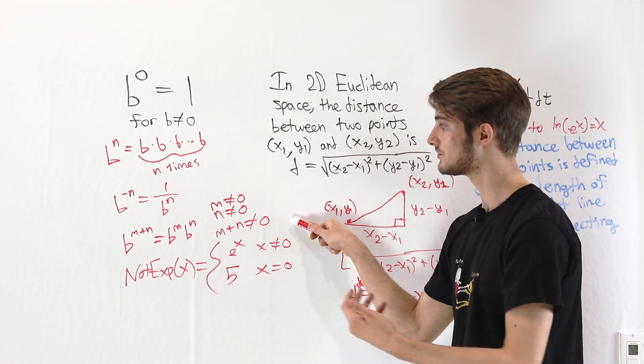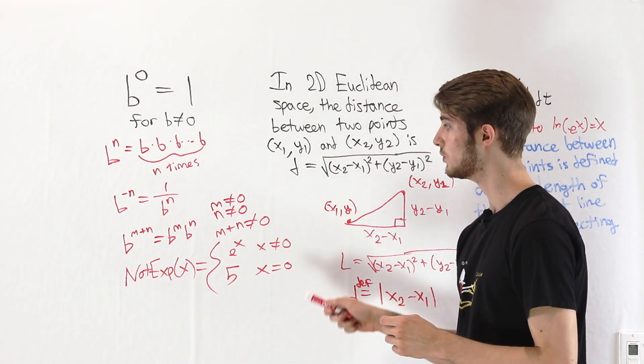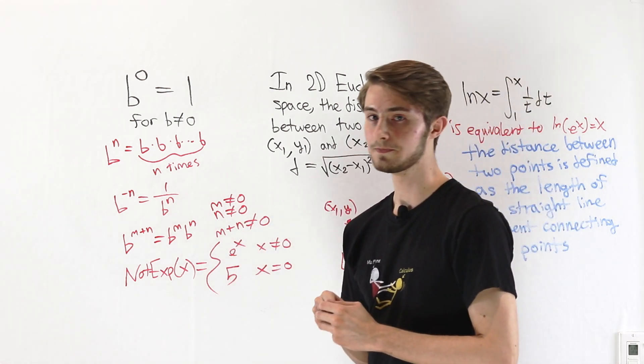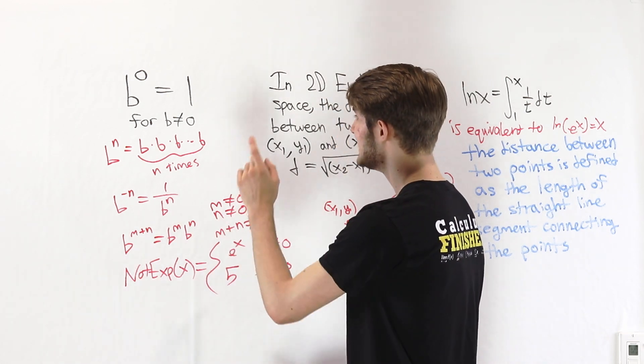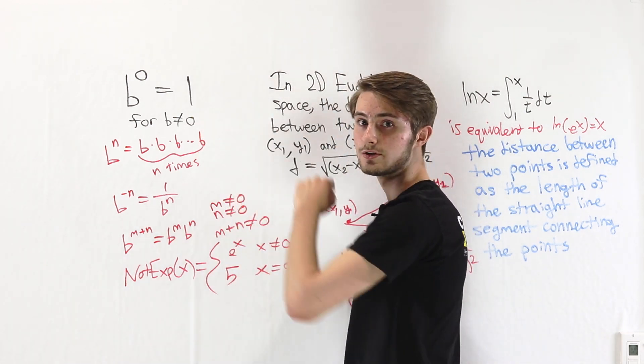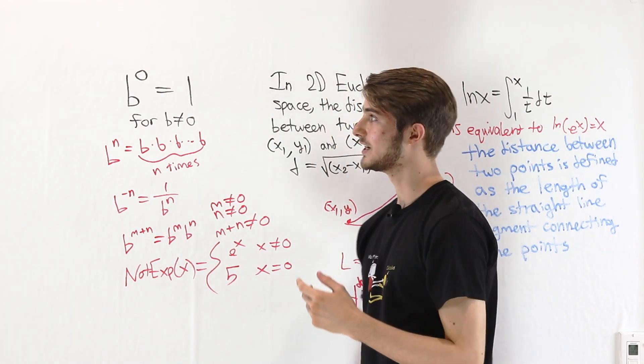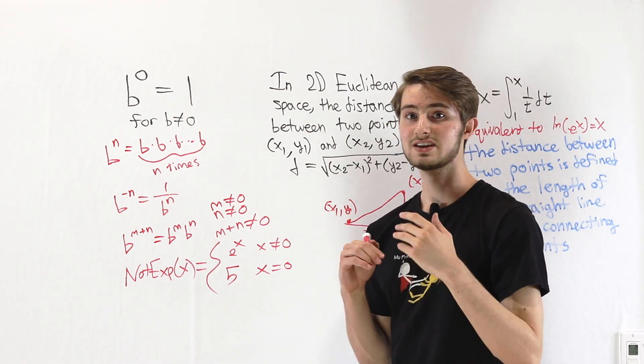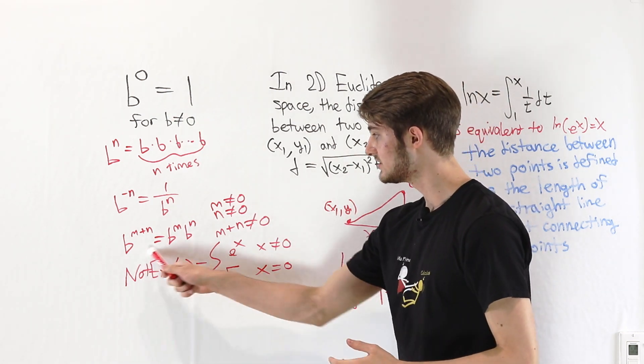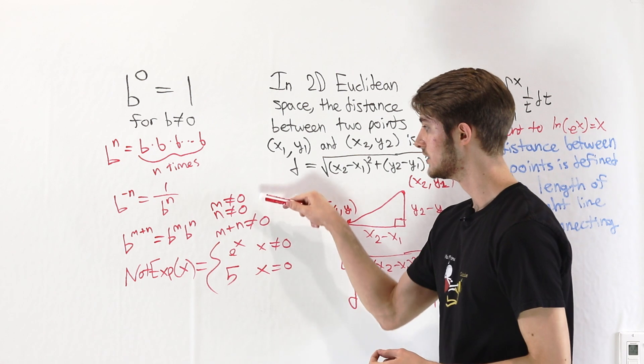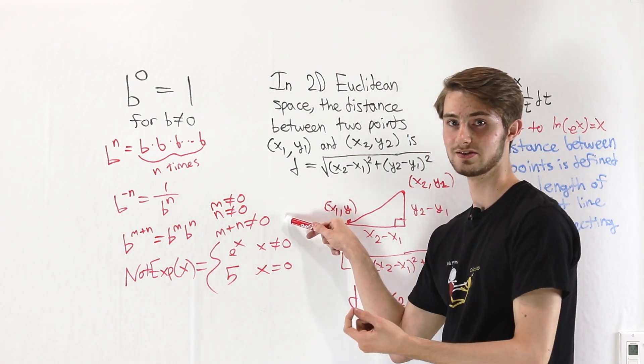it would also make sense for that rule to hold when the exponent is 0. So we could say instead of b to the 0 equals 1, we could define b to the 0 is the number such that this statement is still true when we plug in b to the 0.